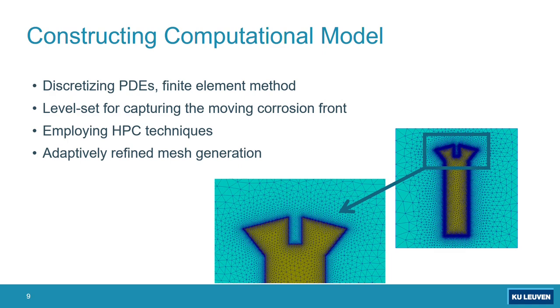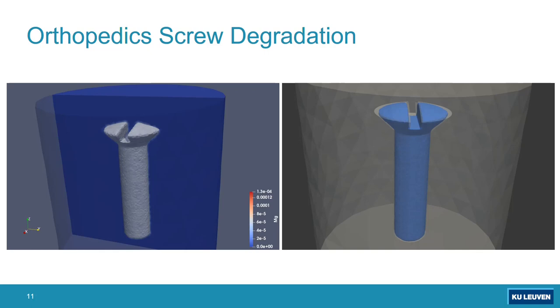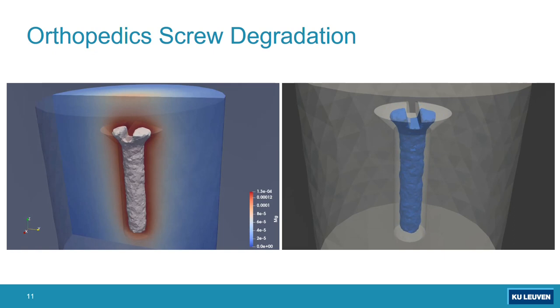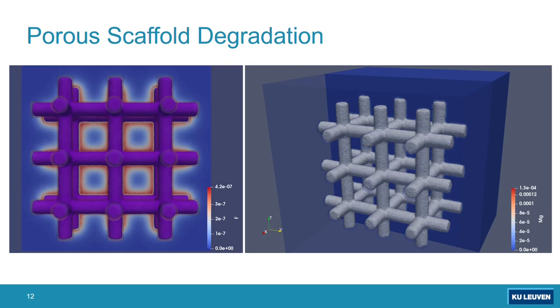Some basic simulation results that the model is capable of producing: for a simple orthopedic screw, it can be like this. You can see on the left release of material, in this case magnesium ions to the environment, and on the right that's actually the level set better showing how the morphology of the screw changes over time during degradation.